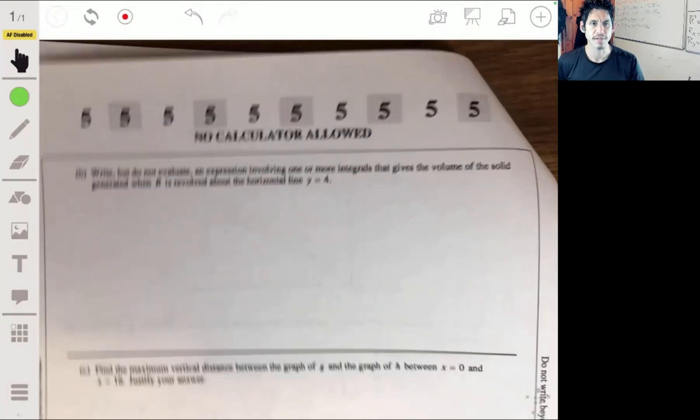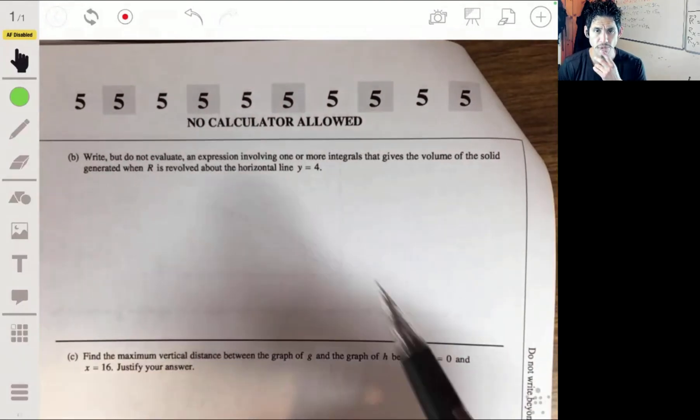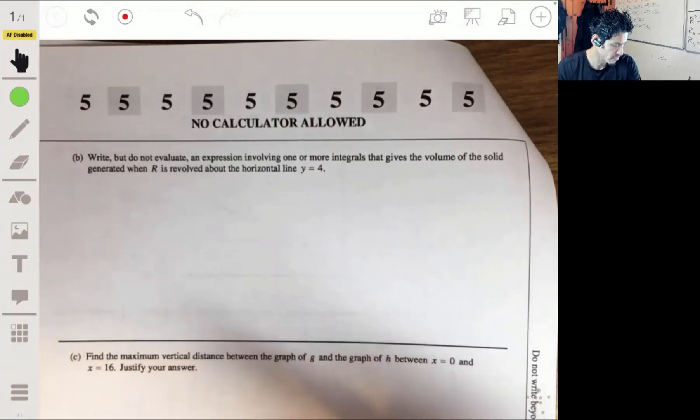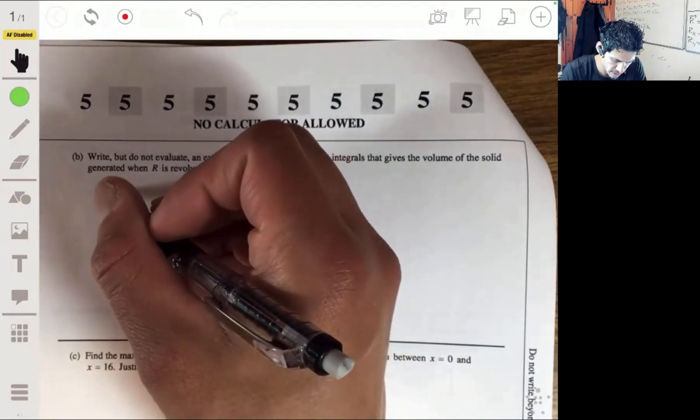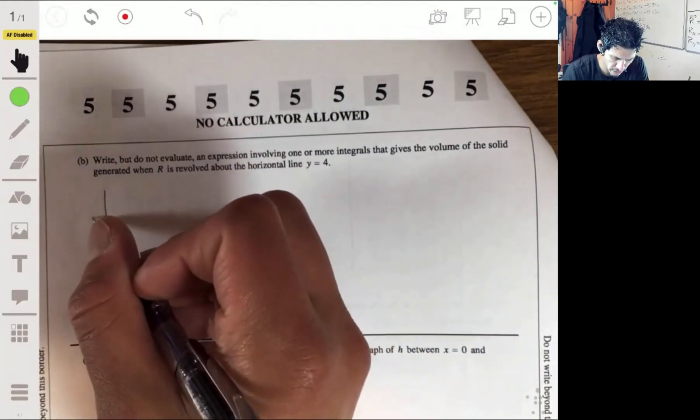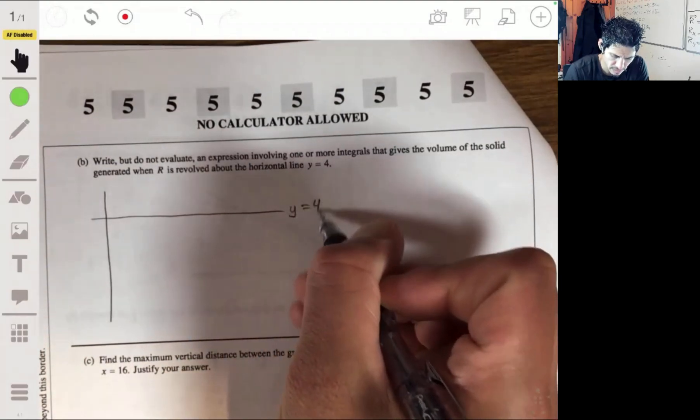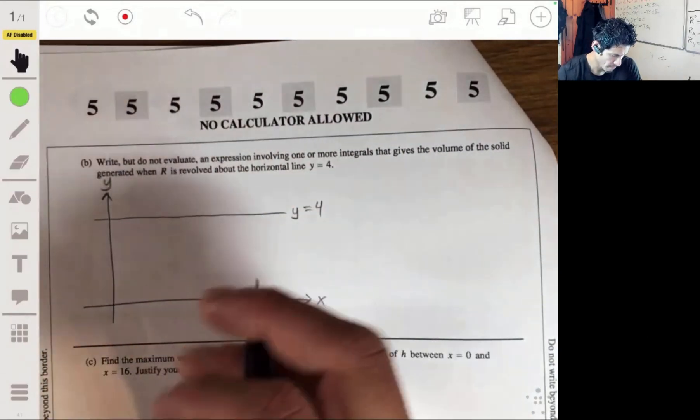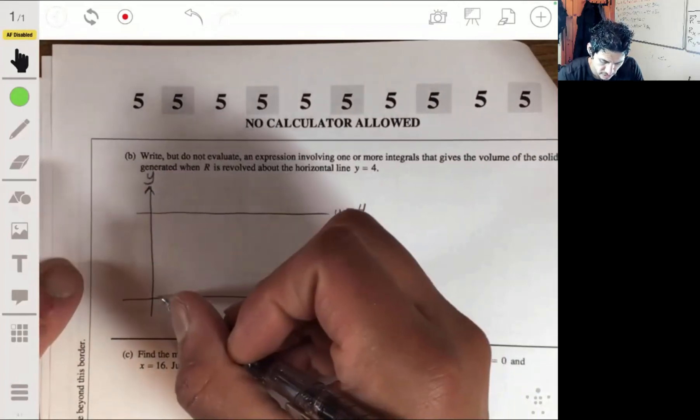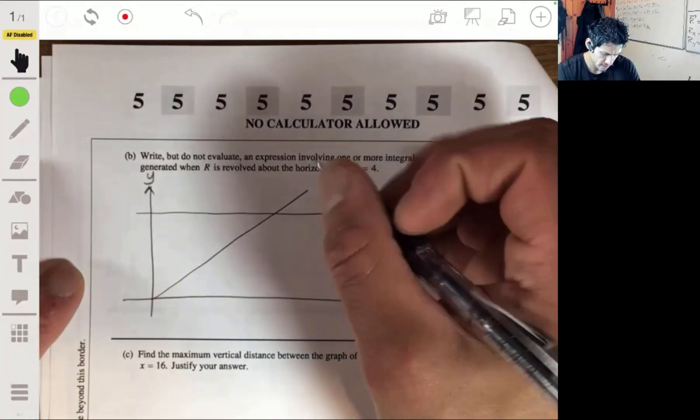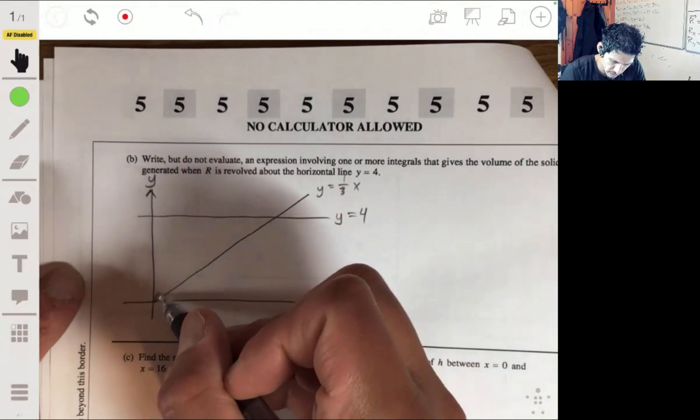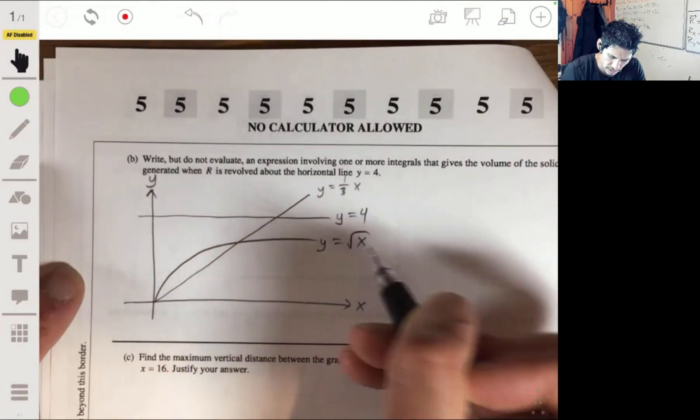Part B: write but do not evaluate an expression involving one or more integrals that gives the volume of the solid generated when R is revolved about the horizontal line y equals 4. So let me just draw a little sketch here. The line y equals 4. We have the x-axis and the y-axis. Then we have the 1/3 x and the square root of x. That's your 1/3 x, and the square root of x. And this is your R.